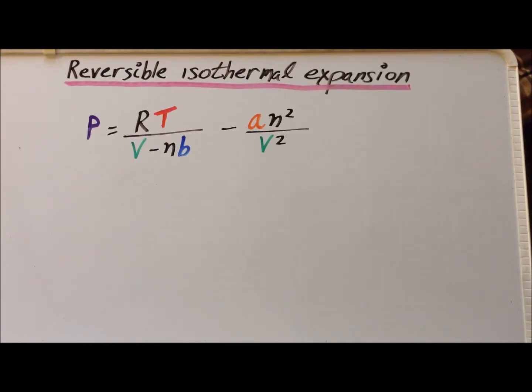First, a reminder of the van der Waals equation. The pressure P is equal to RT divided by V minus NB minus AN squared over V squared,